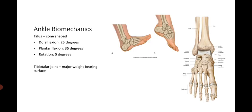For ankle biomechanics, the talus articulates at the distal tibia. The talus is cone-shaped, providing dorsiflexion of around 25 degrees, plantar flexion of 35 degrees, and rotation of 5 degrees. The instant center of rotation in the ankle joint is in the talus. The trochlear surface is wider anteriorly and laterally. The talus and fibula externally rotate slightly with dorsiflexion. The tibiotalar joint is the major weight-bearing surface of the ankle, supporting compressive forces up to five times body weight.